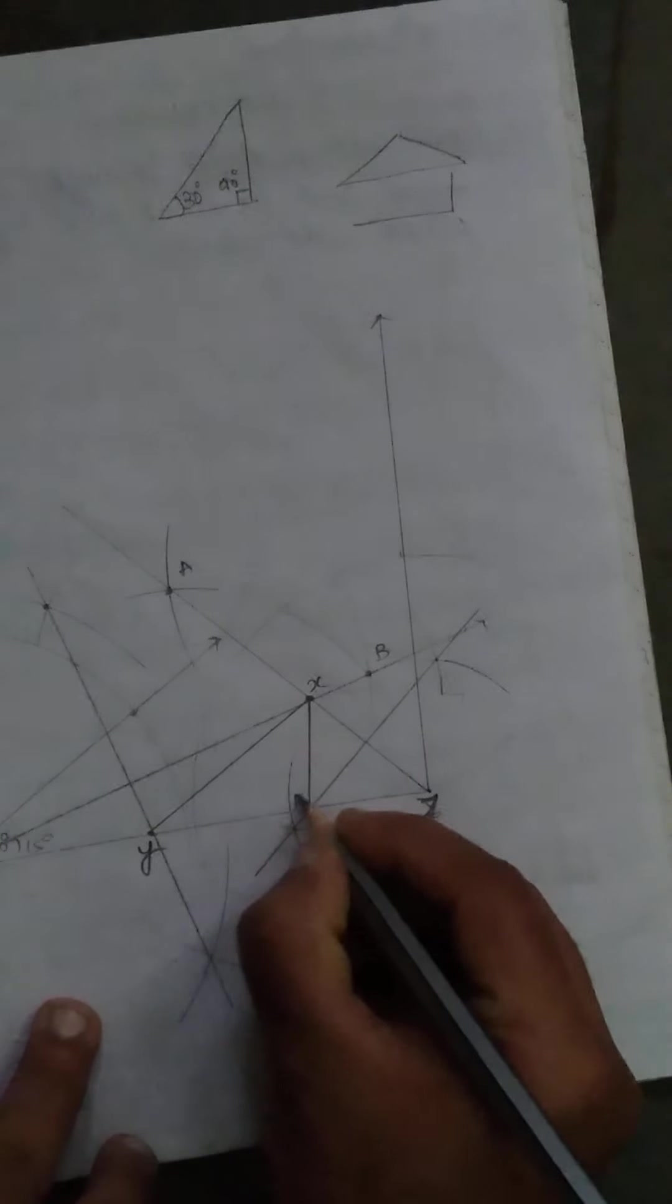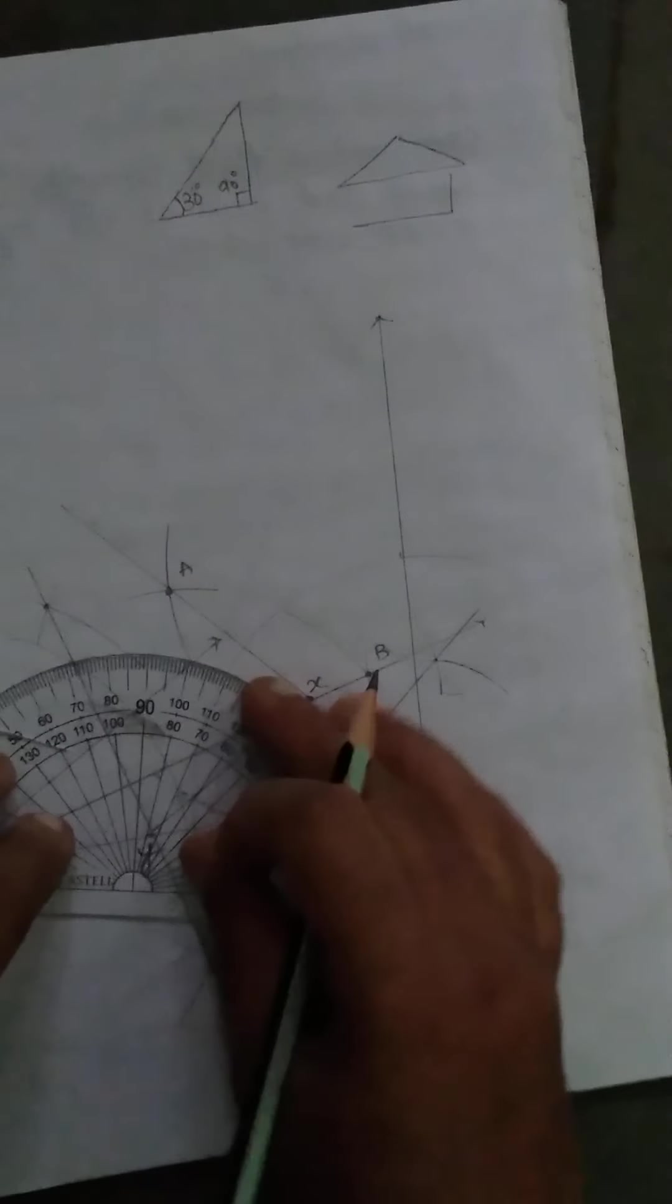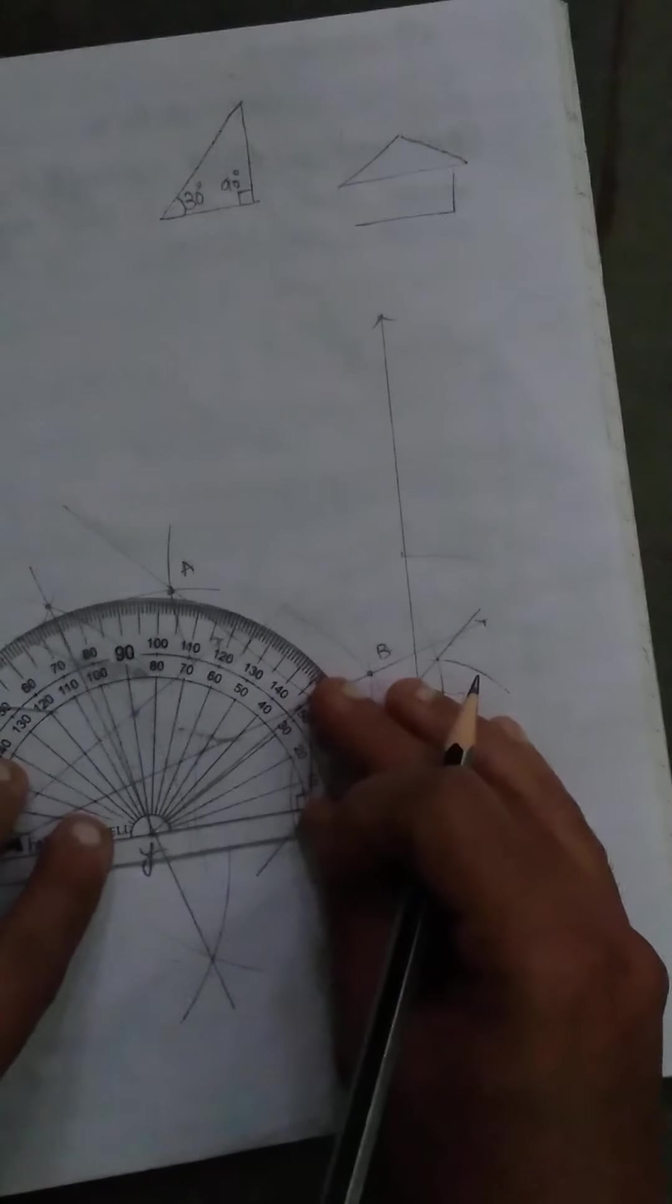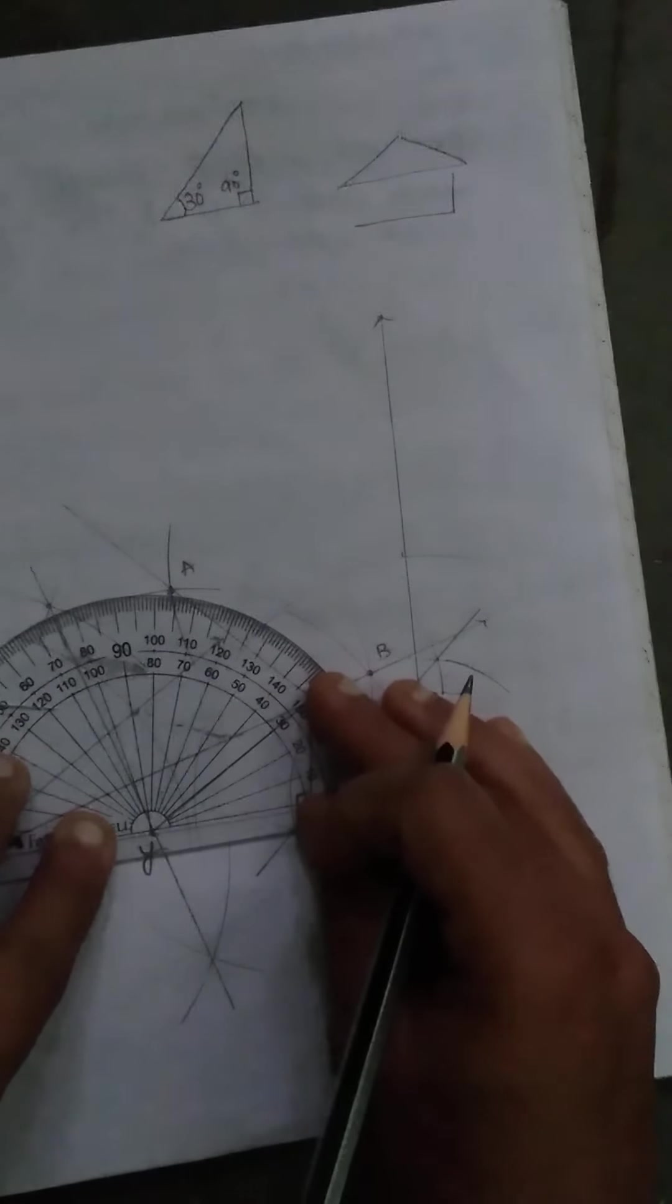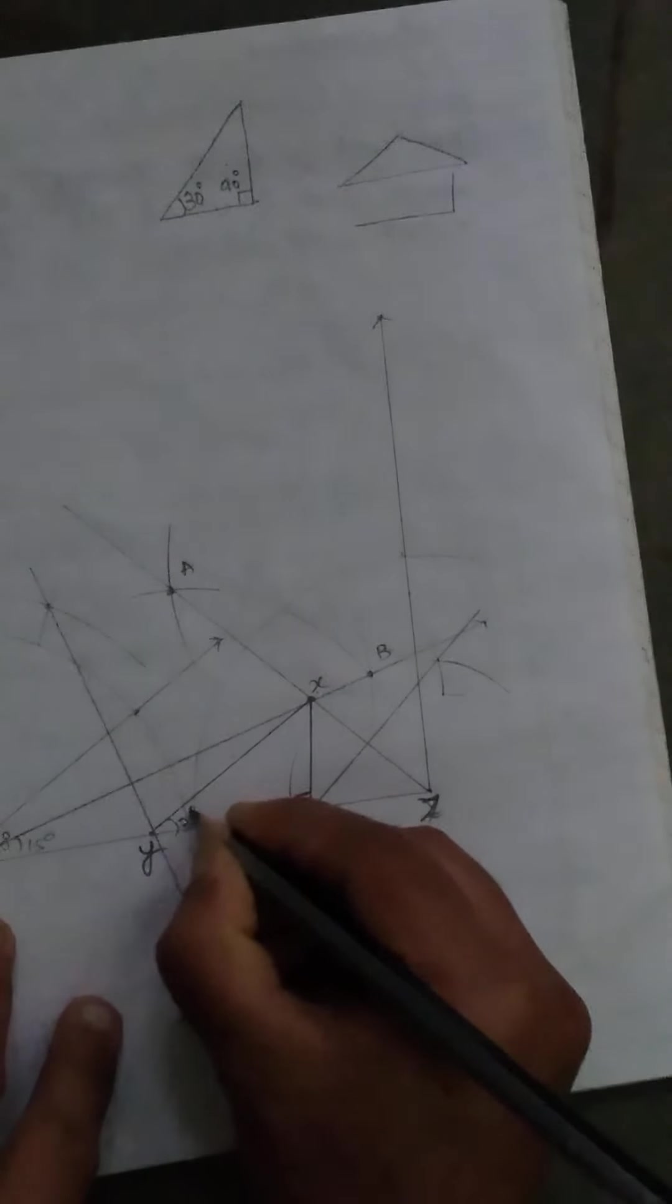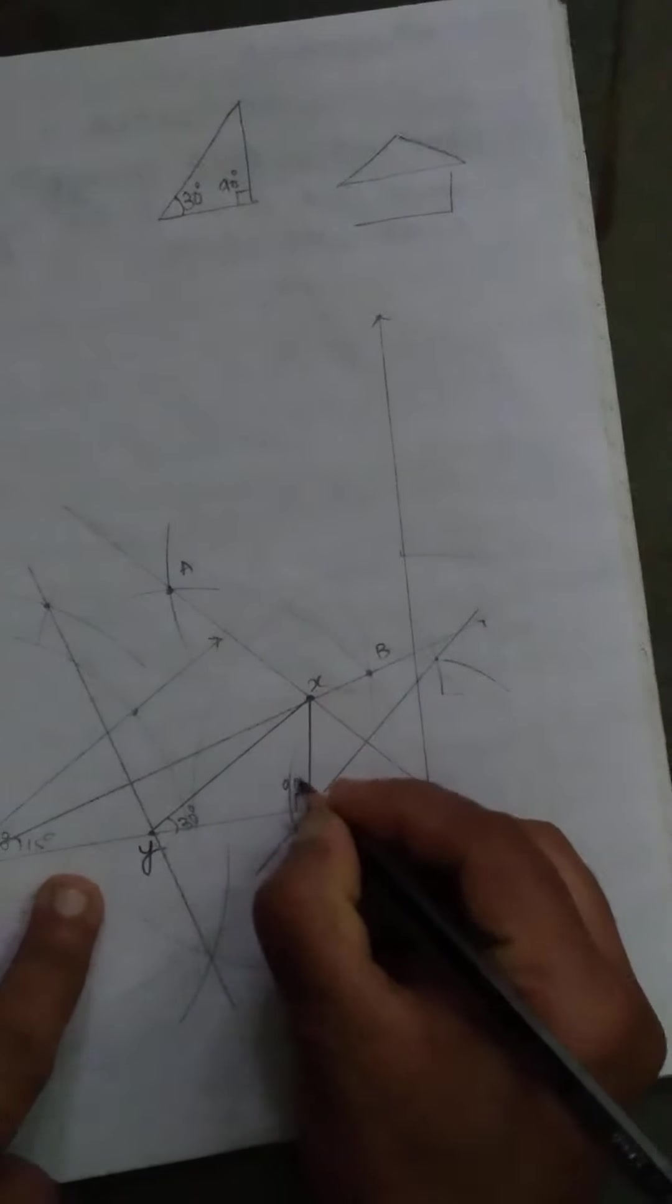Here this is exactly 90 degree. And you can measure this angle Y by using protractor. This is exactly equal to 30 degree. You can observe here, angle Y is 30 degree, angle Z is 90 degree. Now we got a triangle.